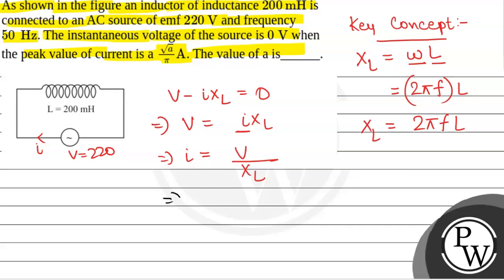From here we solve for I, which equals 220 divided by XL. XL equals 2π times frequency 50 hertz times L. The inductance is 200 millihenry, which is 200 times 10 to the power minus 3 henry. So XL equals 20π ohms. Putting this value, I equals 220 divided by 20π, which equals 11 by π.